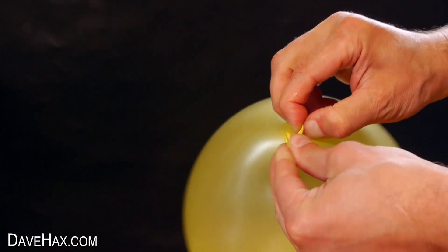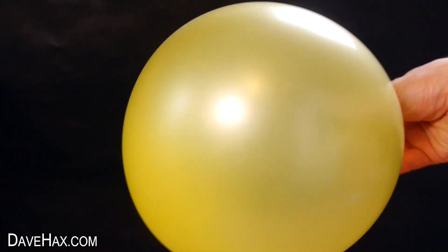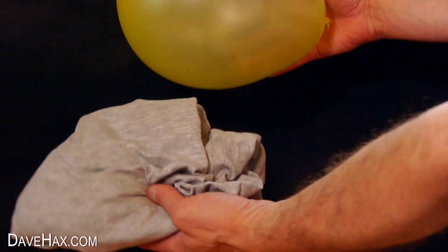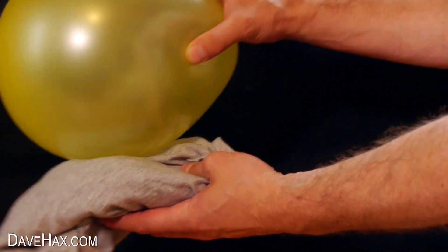We're going to be using this balloon to pick up the ground pepper without touching it. To do this we first need to charge the balloon with static electricity, so I'm rubbing my balloon on this cotton t-shirt. If you like you could try rubbing it on the hair on your head.